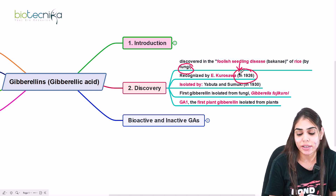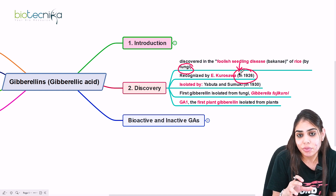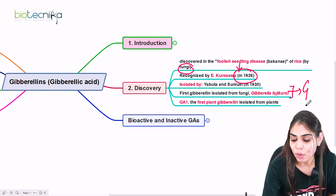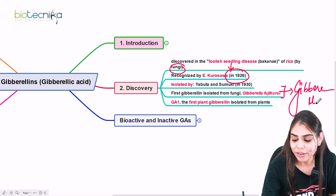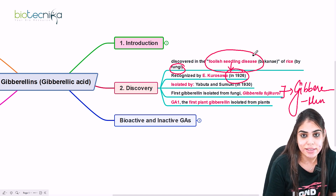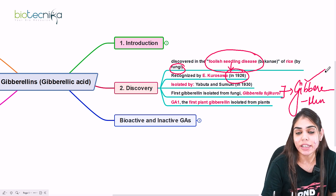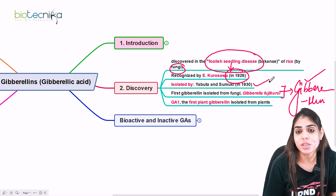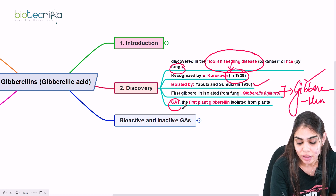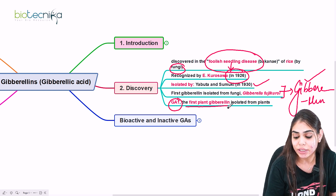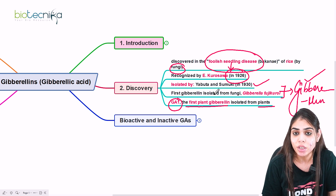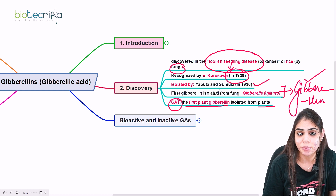This foolish seedling disease was recognized by E. Kurosawa, but this Fusarium fujikuroi was later renamed as Gibberella fujikuroi, which releases a compound called gibberellin. This gibberellin is responsible for causing the foolish seedling disease. The compound was isolated by Yabuta and Sumuki in 1930. So recognition was done by E. Kurosawa, whereas isolation was done by Yabuta and Sumuki in 1930. The gibberellin isolated from the plant was GA1, making it the first plant gibberellin isolated.